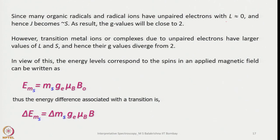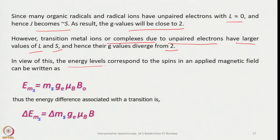For many organic radicals and radical ions with L = 0, J = S, and the G value is close to 2. However, for transition metal ions and complexes, larger L and S values cause G to diverge from 2. The energy levels are expressed as E_mS = mS × gₑ × μ_B × B₀, and the energy difference for a transition is ΔE = ΔmS × gₑ × μ_B × B₀.